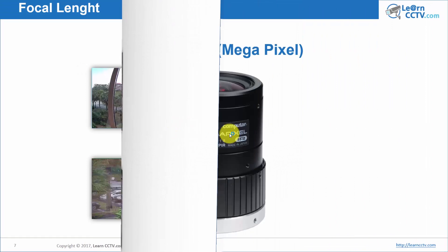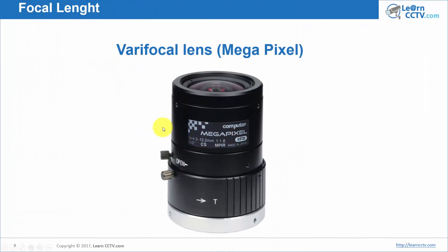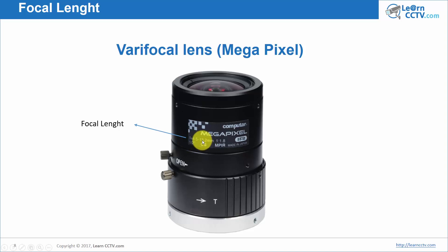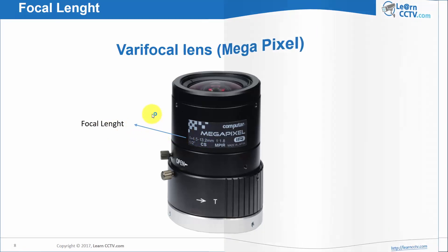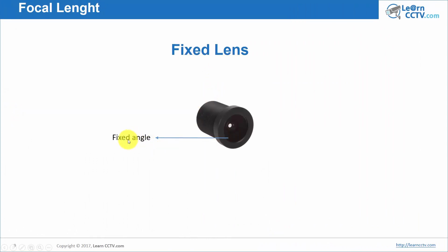When you're going to buy your camera, you need to buy the lens and look at the focal length. This model, for example, has focal lengths of 4.5 to 13.2 millimeters, so I can vary from 4.5 to 13 millimeters and zoom in or zoom out. Another model here has a fixed lens — in that case I have a fixed angle and cannot change it. I buy it with 2.8 millimeters, it's 2.8; with 3, it's 3; with 6, it's 6.